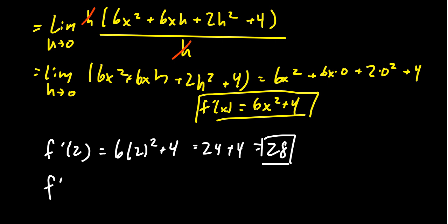On the other hand, we were supposed to also do f'(-1), which this will look like 6(-1)² + 4. -1² is going to give you a positive 1. Times it by 6 will give you 6 plus 4. Then we see that the slope of the tangent line here would be 10.